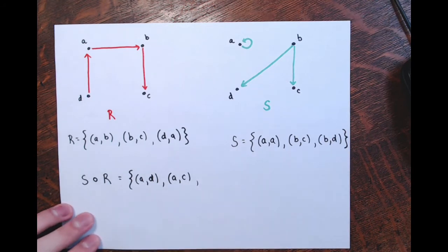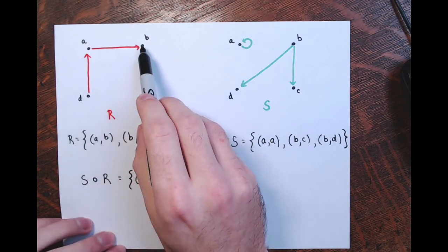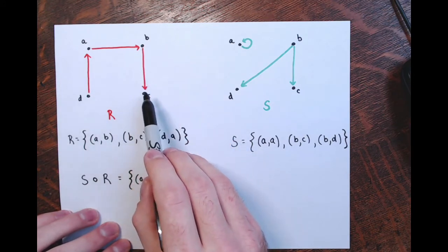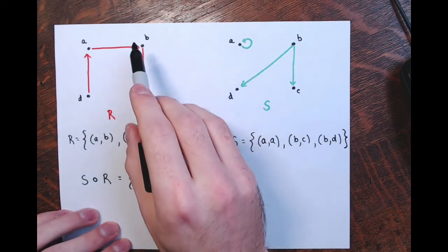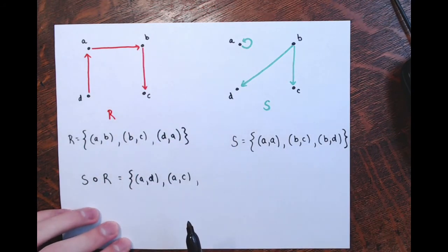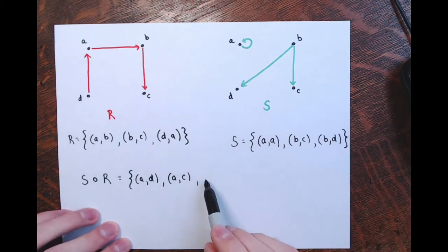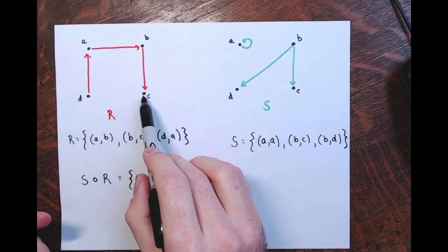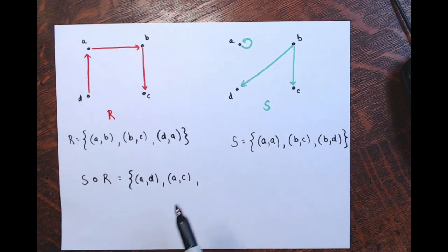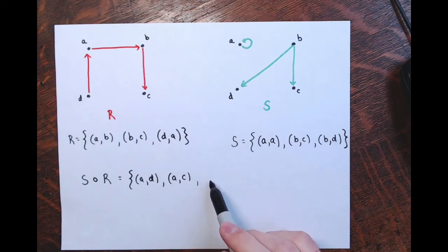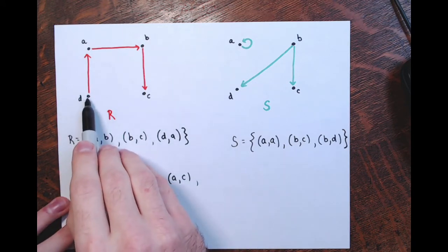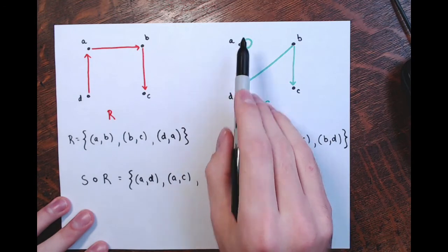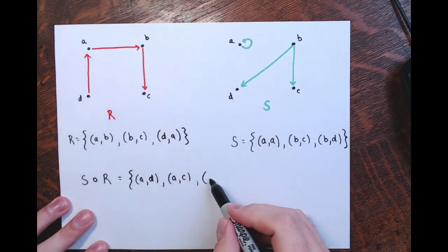For element B: B maps to C in R, but C doesn't map to anything in S — dead end, so no ordered pairs starting with B. For C: C doesn't map anywhere in R — dead end, so no ordered pairs starting with C in S∘R. For D: D maps to A in R, and A maps to itself in S, so D maps to A in S∘R.